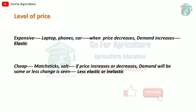For cheap products like matchsticks and salt — even if the price changes, demand doesn't change much. For example, matchsticks cost just 2 to 5 rupees. If the price drops to 1 rupee, you won't go buying them by the lorry-load — you'll just buy what you need. These are less elastically demanded products. So cheap products are less elastic or inelastic — there is no significant change in demand when price increases or decreases.